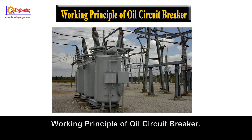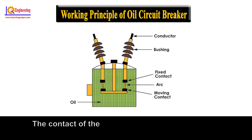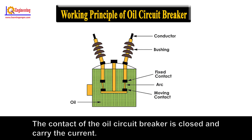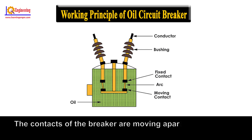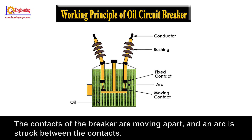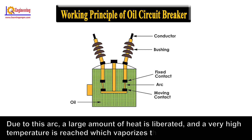Working Principle of Oil Circuit Breaker: During normal operating conditions, the contacts of the oil circuit breaker are closed and carry current. When a fault occurs in the system, the contacts of the breaker move apart and an arc is struck between the contacts. Due to this arc, a large amount of heat is liberated, and a very high temperature is reached which vaporizes the surrounding oil into gas.